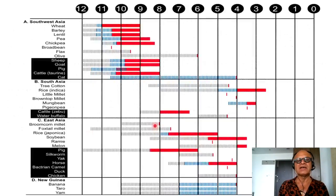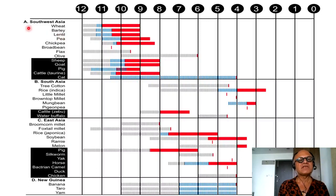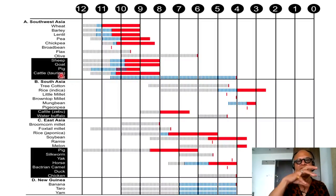Going from the late Pleistocene/early Holocene period into the modern period, looking at various regions: Southwest Asia — wheat, barley, lentil, pea, chickpea, broad bean, flax, olive, and animals including sheep, goat, pig, cattle, and cat. These are specific kinds of cattle — taurine — so you can see whether they are native species or could have been brought from elsewhere. South Asia has tree cotton, rice, millets, mung bean, pigeon pea, with zebu cattle and water buffalo.